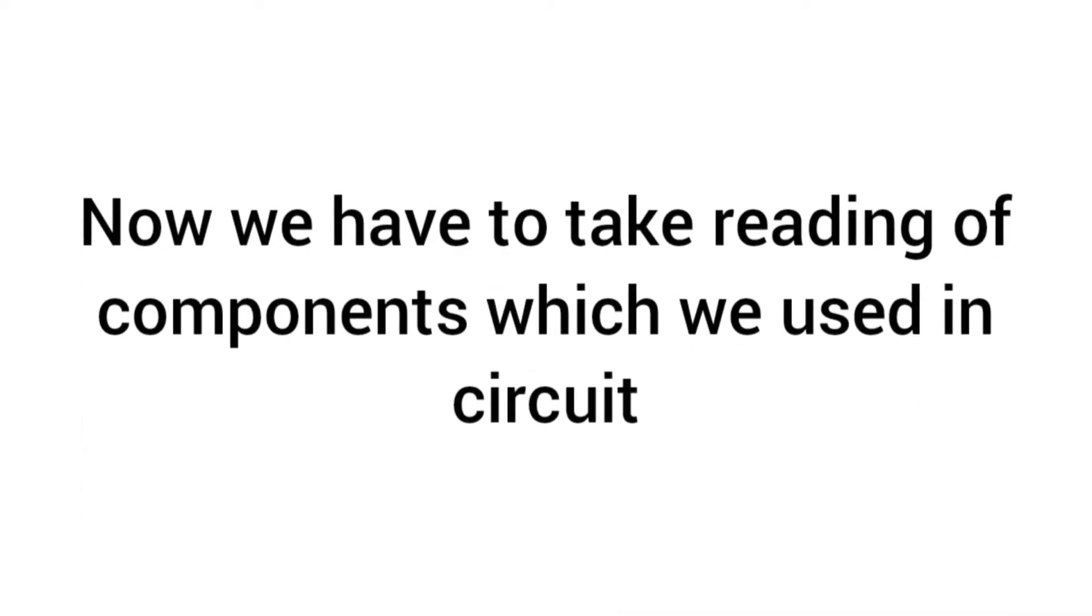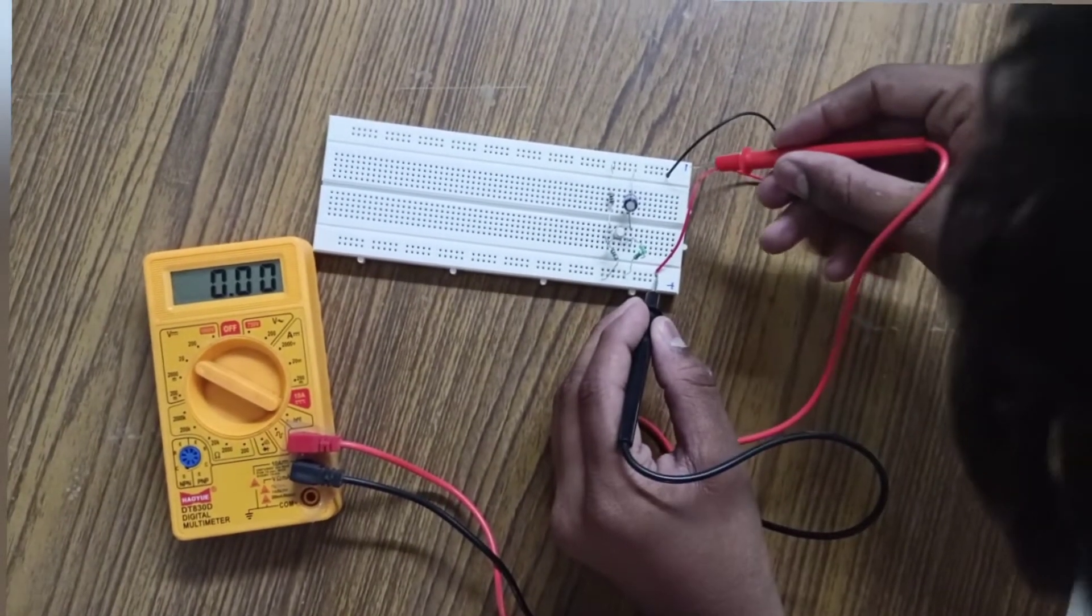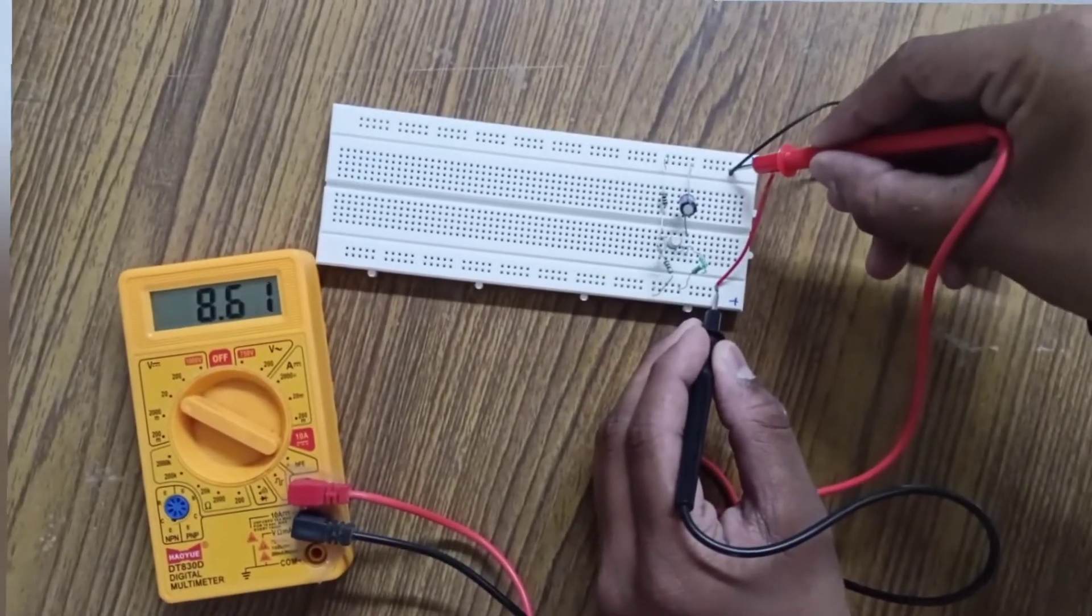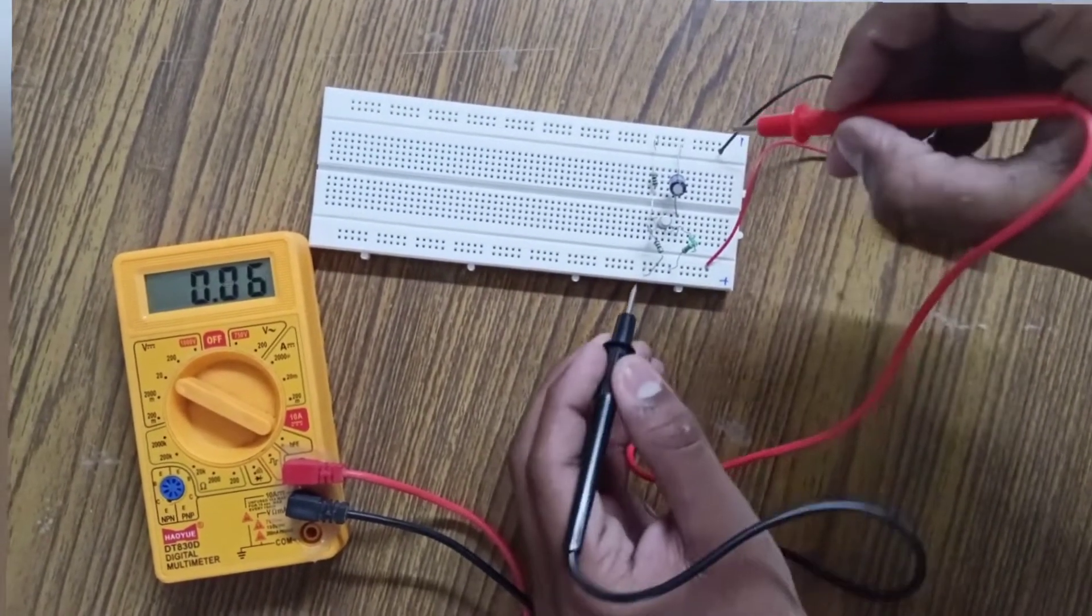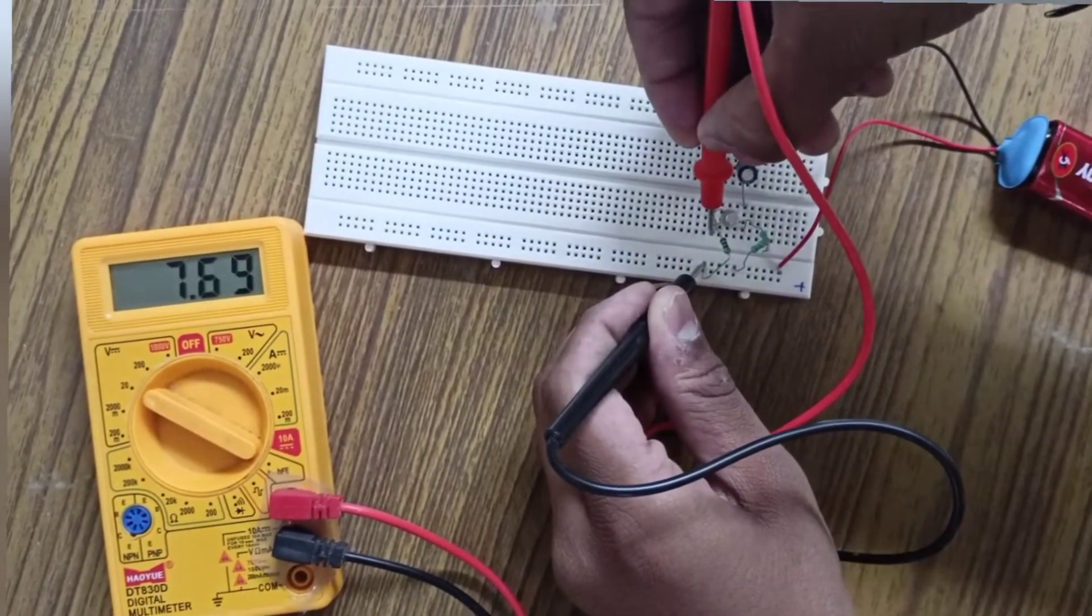Now we take readings of the components used in the circuit. First, the battery voltage is 8.62 volts. We measure the voltage across the 150 ohm resistor and it is 7.8 volts.